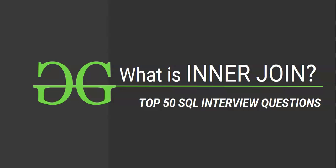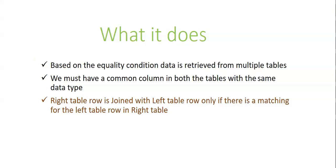The question is the most frequently asked question — that is about inner join. What is inner join? Joins are used to combine data from multiple tables, and in inner join, data is combined based on some equality condition. Whenever there is a matching value in both the tables, then only the data is joined. There must be a common column in both tables with the same data type to join them.